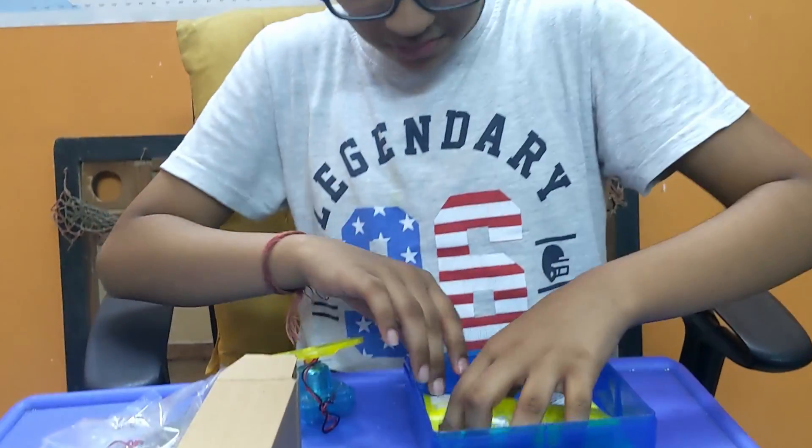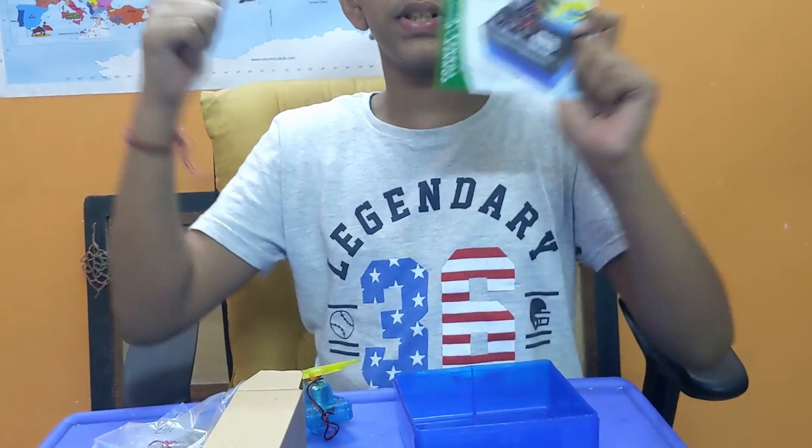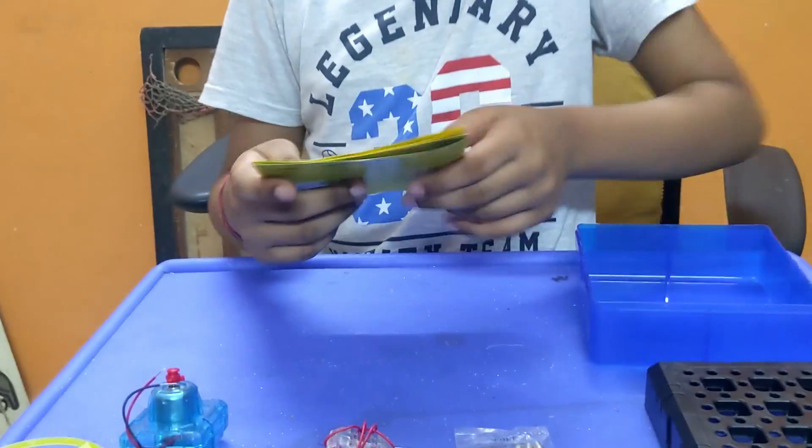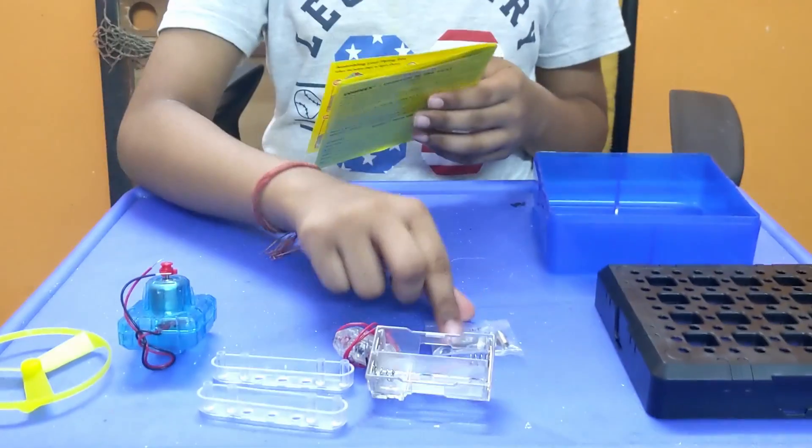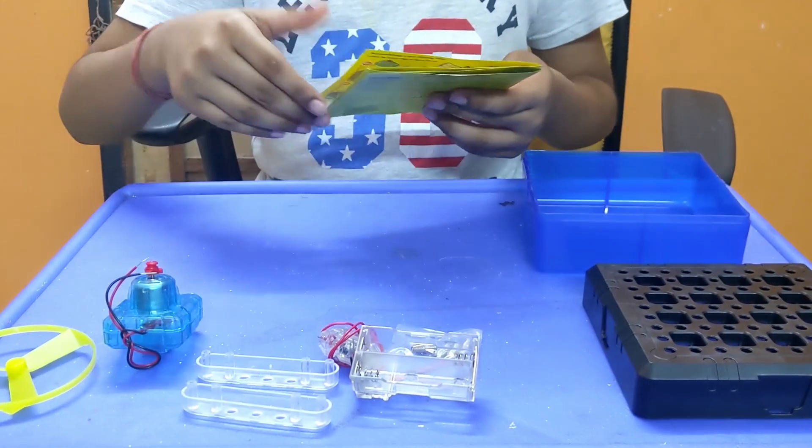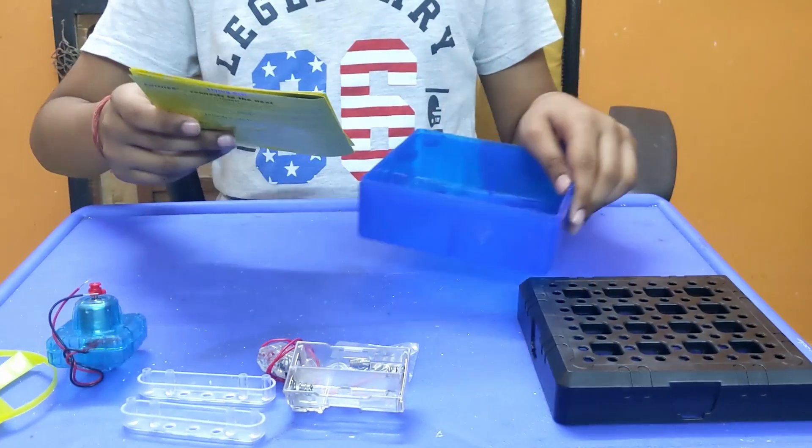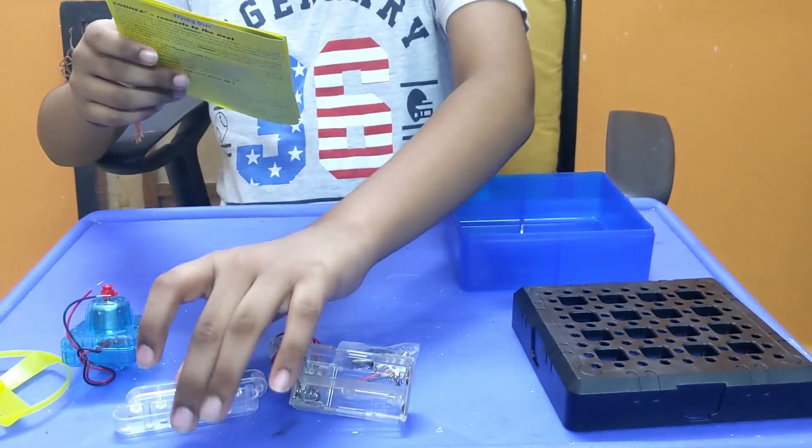And the instruction manual, the most important thing. So let's get to it. Auto module, check. Baseable poles, check. Battery component, check. On-off switch, check. Springy connectors, check. Flying disk, check. Eco-friendly reusable box, check. Connecting bridges, check. So let's get started.